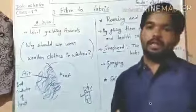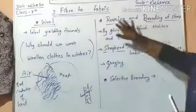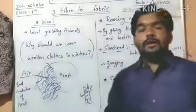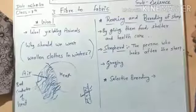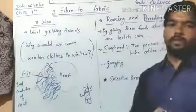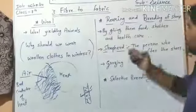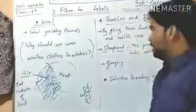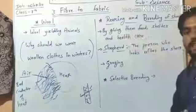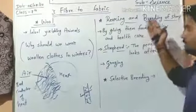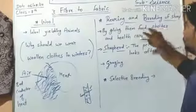Now let's talk about rearing and breeding of sheep. Rearing means to look after the sheep by giving them food, shelter, and health care. This means feeding them, providing a shelter for them to live in, and ensuring their health care so that no disease affects them. This process of looking after sheep by giving them food, shelter, and health care is called rearing.